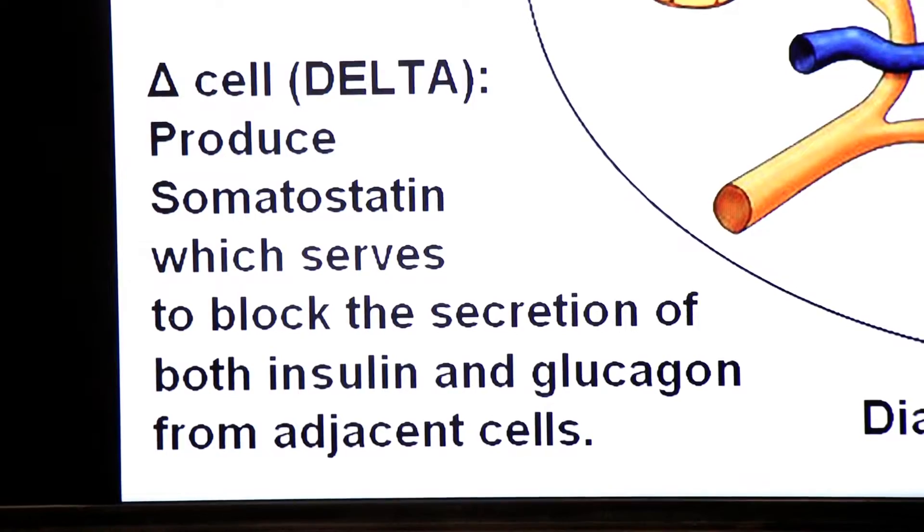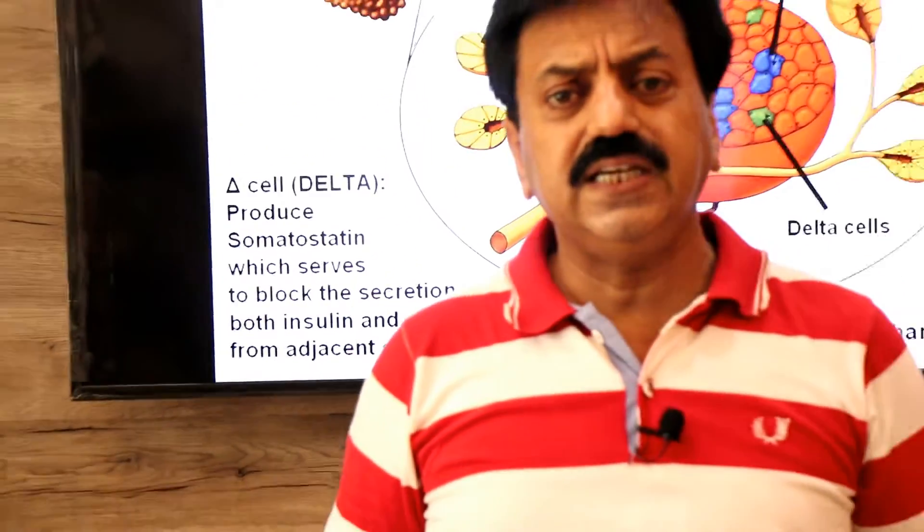So dear students, this was the endocrine part made up of the Islets of Langerhans, having alpha cells, beta cells, and delta cells.